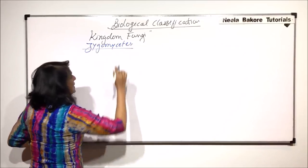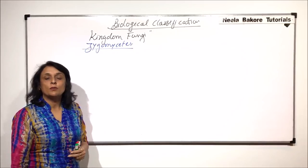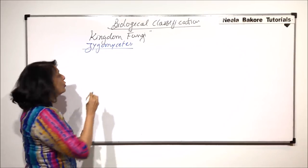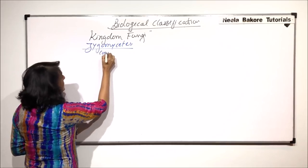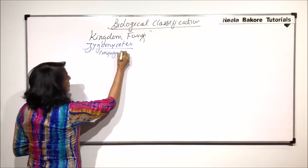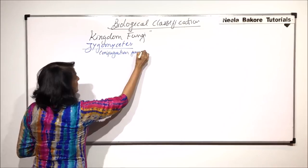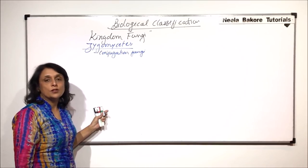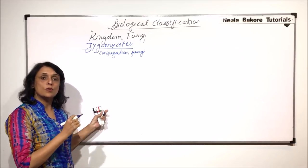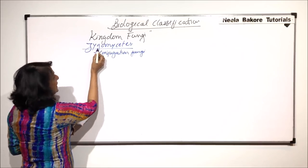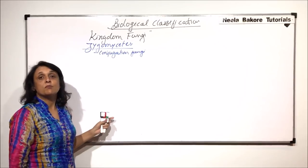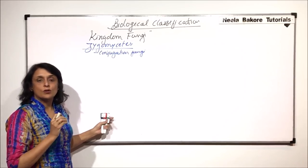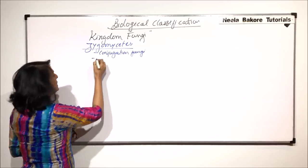We have talked about the zygomycetes when we were talking about the brief classification. Zygomycetes is a group which is also known as conjugation fungi because during sexual reproduction, the two hyphae are going to conjugate. They are known as zygomycetes because after conjugation, there is a zygote-like structure also formed.